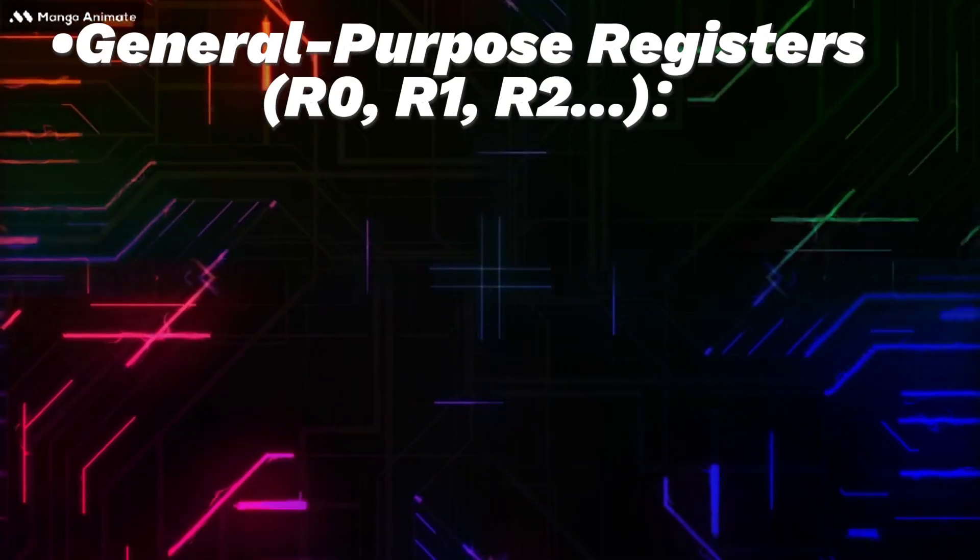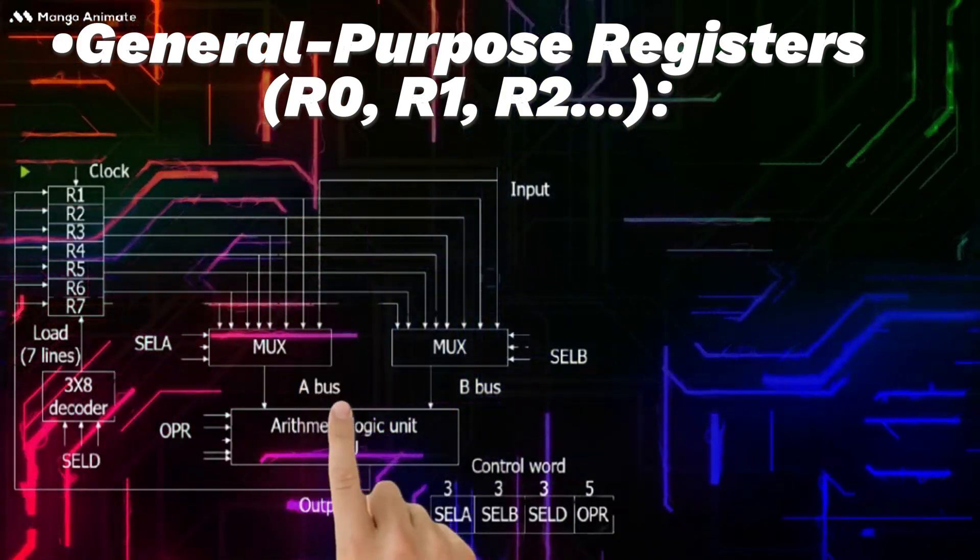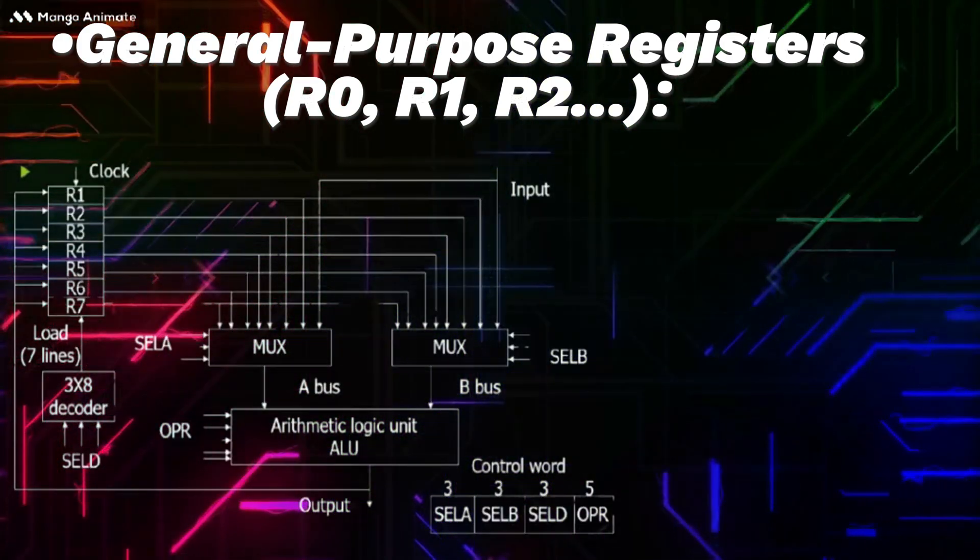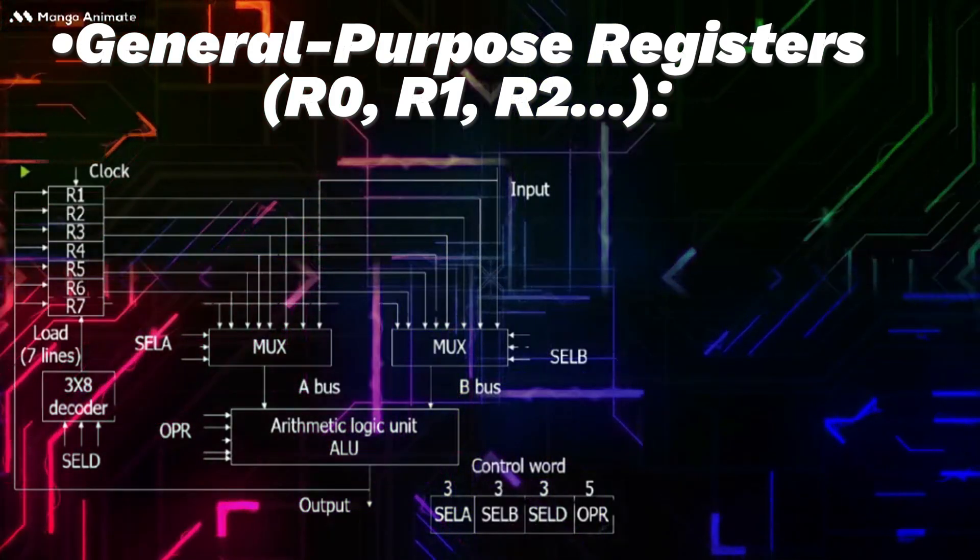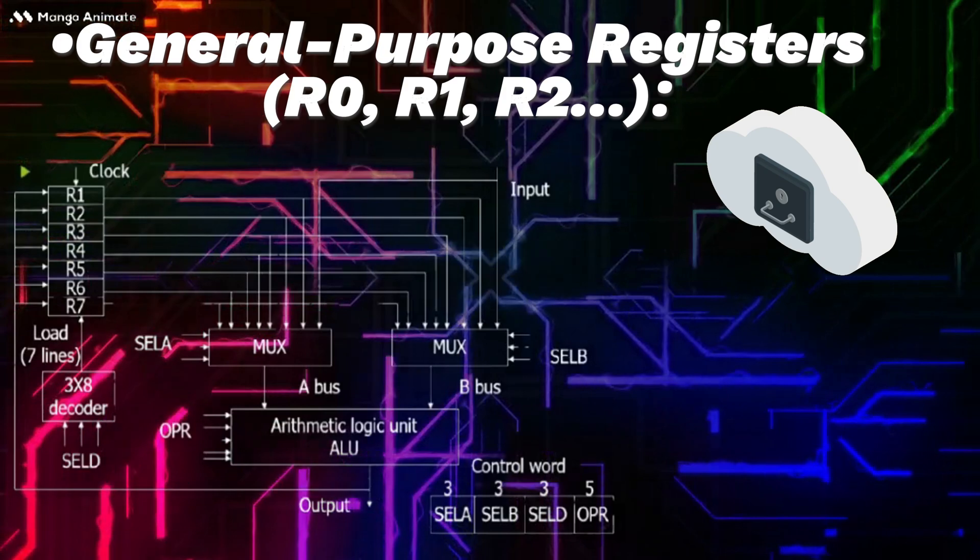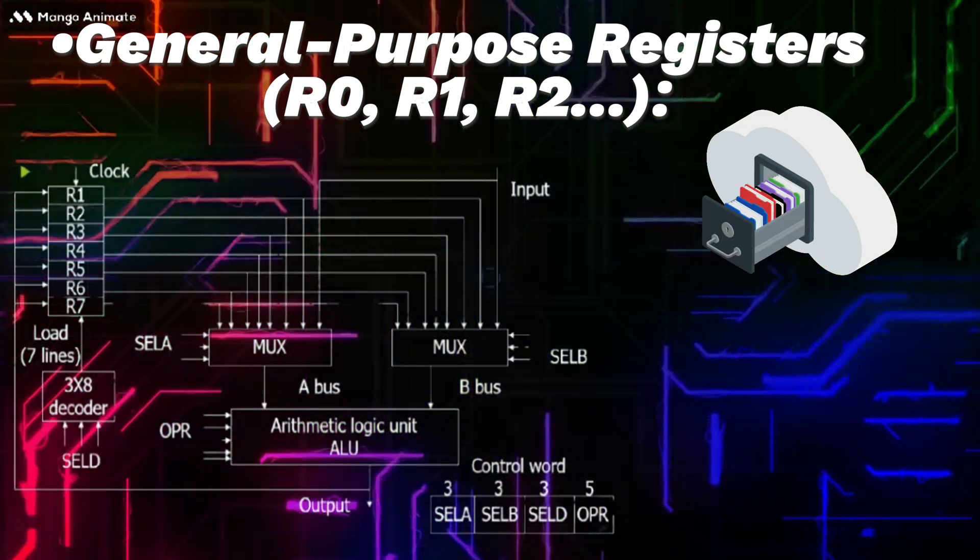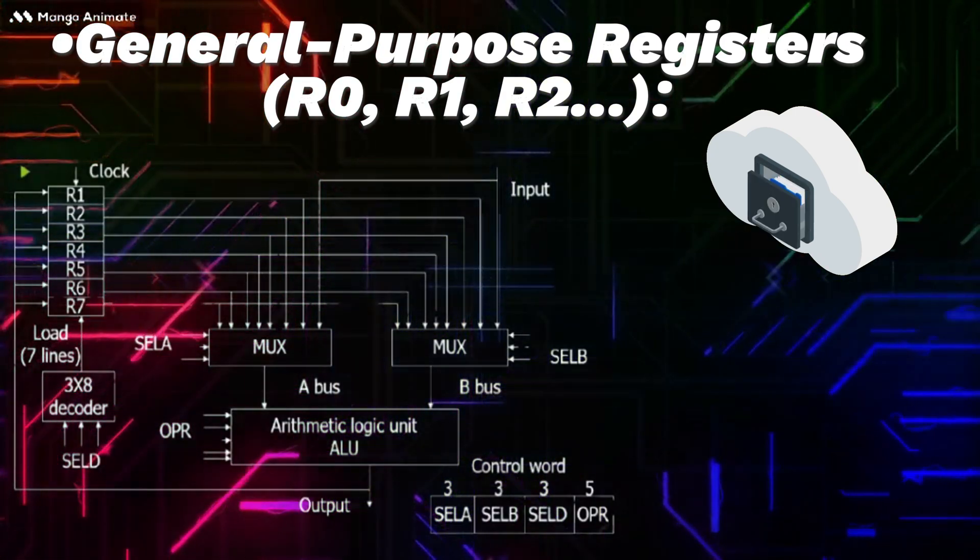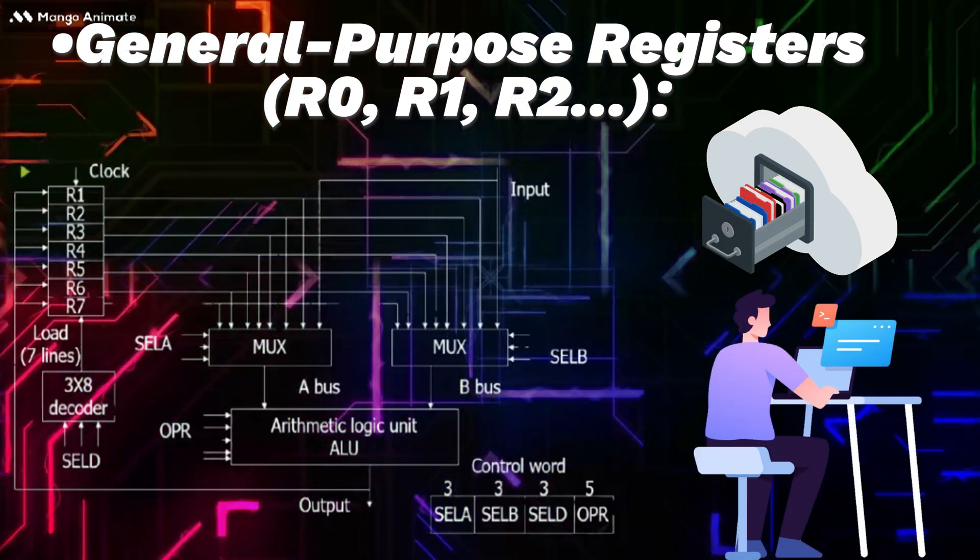General purpose registers or what we call R0, R1, R2: These registers are used to store data during calculations and data manipulation. They can be accessed and utilized by the programmer for various purposes.